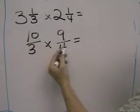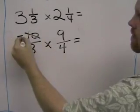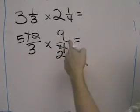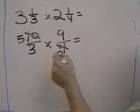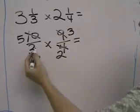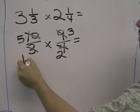10 and 4 are both divisible by 2, so 10 divided by 2 is 5, 4 divided by 2 is 2, and 9 and 3 are both divisible by 3, so 9 divided by 3 is 3, and 3 divided by 3 is 1.